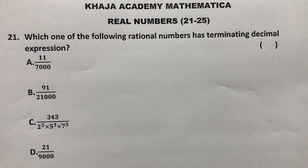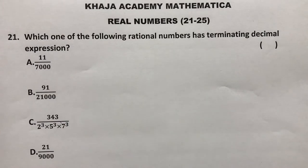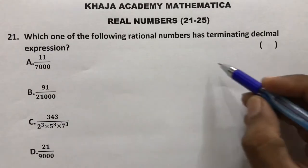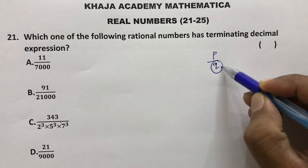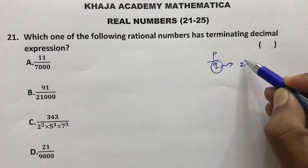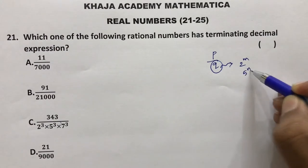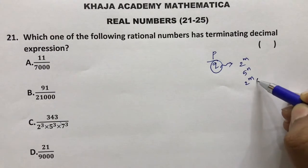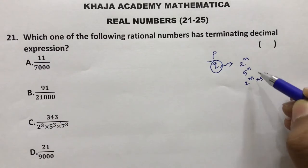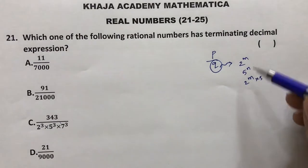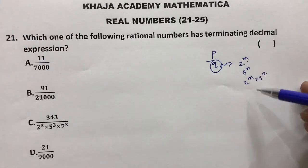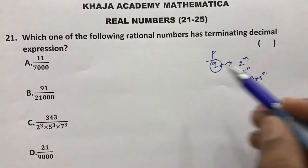Which one of the following rational numbers has a terminating decimal expansion? Terminating means that for a number p by q, the denominator should have only the factors of 2 or 5, or 2 and 5. Other than 2 and 5, we should not have any other prime factor. We will check each option.